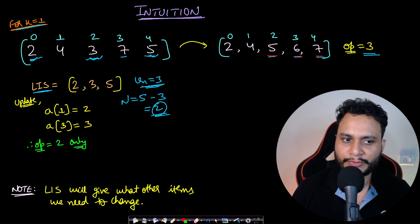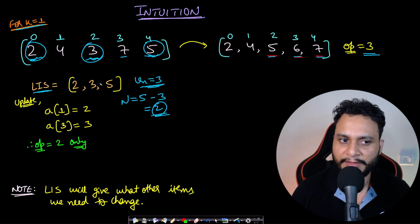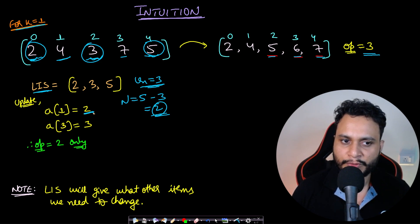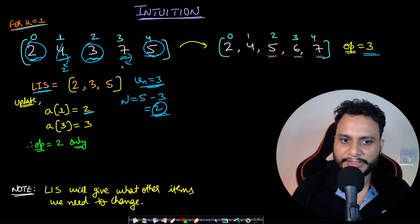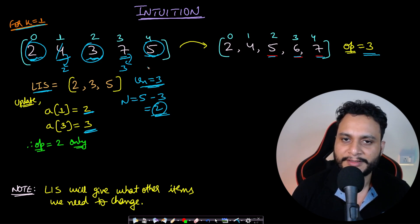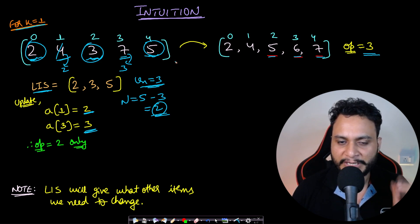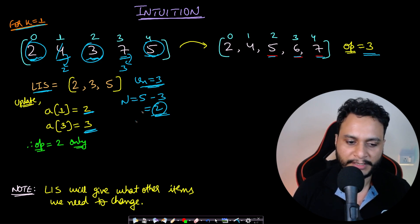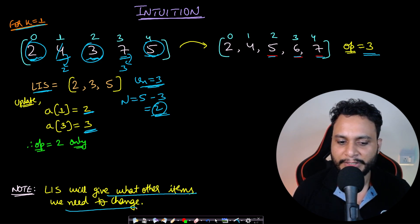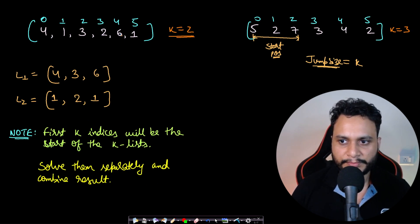For those 2 operations on [2, 4, 3, 7, 5] with LIS [2, 3, 5]: change 4 to 2 (so it's between 2 and 3), and change 7 to 3, 4, or 5 (between 3 and 5). The list then becomes non-decreasing. Finding the LIS always guarantees the minimum number of elements to change to produce a non-decreasing curve.